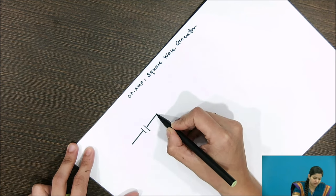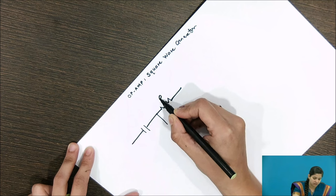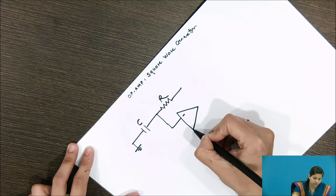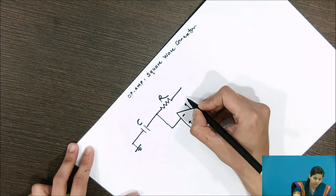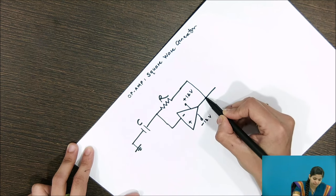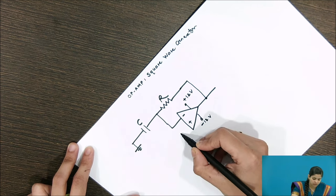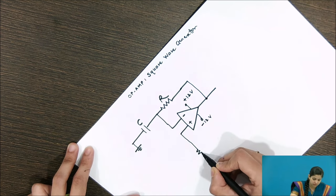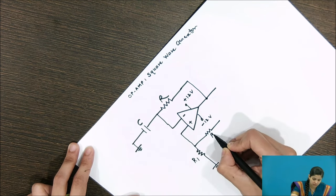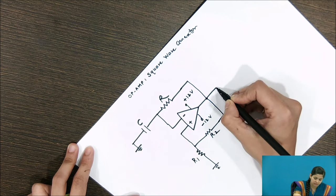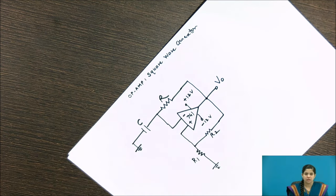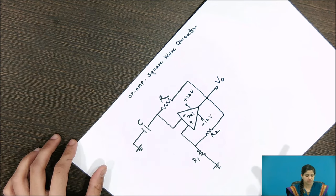The circuit has a capacitor C and one resistor R connected to the inverting terminal of the operational amplifier. As usual, we provide plus 12 volt and minus 12 volt supply. The non-inverting terminal is connected with a voltage divider having R1 and R2, and the output voltage is fed back. This is the circuit for the op-amp as a square wave generator.